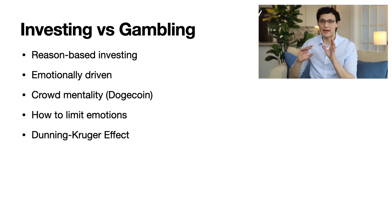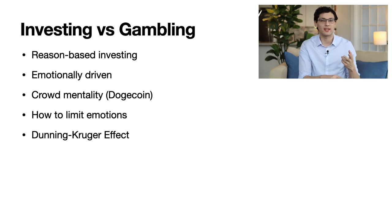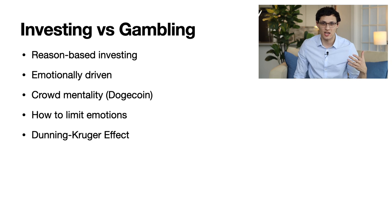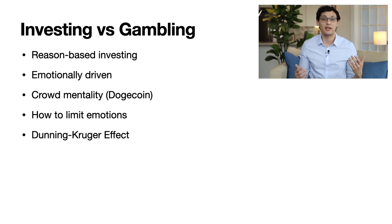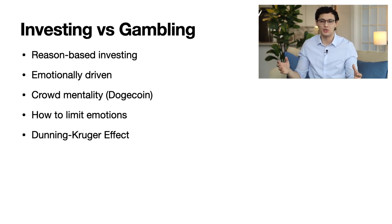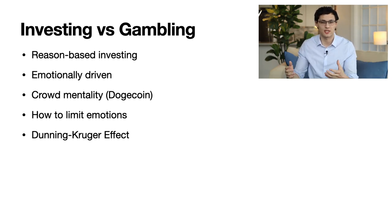Another way to limit emotional investing is to avoid echo chambers. In general, investing on social media-driven platforms like Twitter or Reddit can be problematic because the algorithms tend to encourage echo chambers. While those can be excellent resources and there are some people who do great due diligence, you need to be careful that you're always seeing both sides of the issue. A third tip is to pause — if you're planning on making a trade, write it down on a piece of paper and then wait 24 hours before actually putting in that order. During that pause you can really determine: is this something I actually want to do, or is this just an impulse?